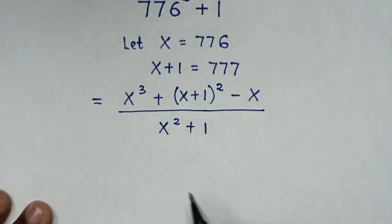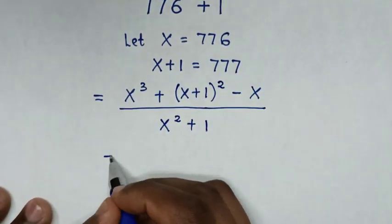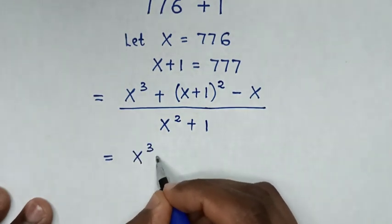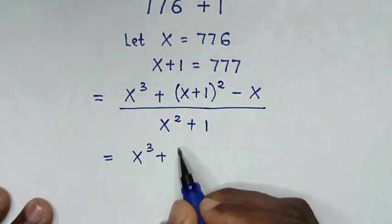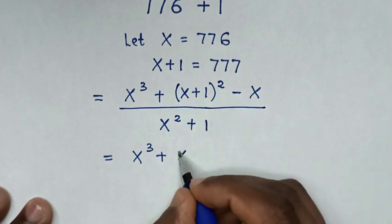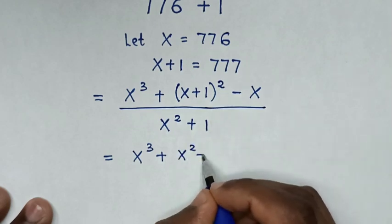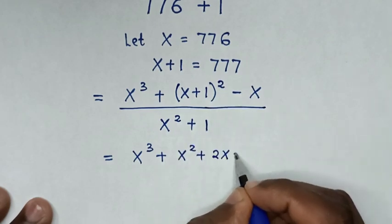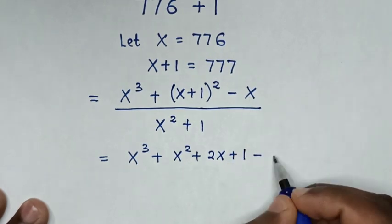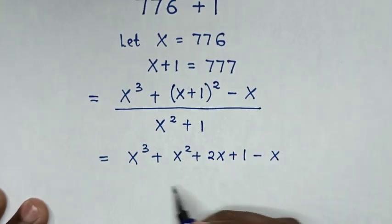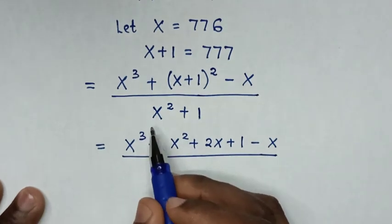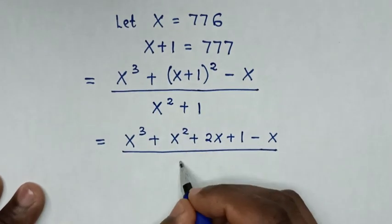In the next step, we will expand this. So it will be equal to x power 3 plus x plus 1 bracket square, which is the same as x square plus 2x plus 1, then minus x, over x square plus 1.